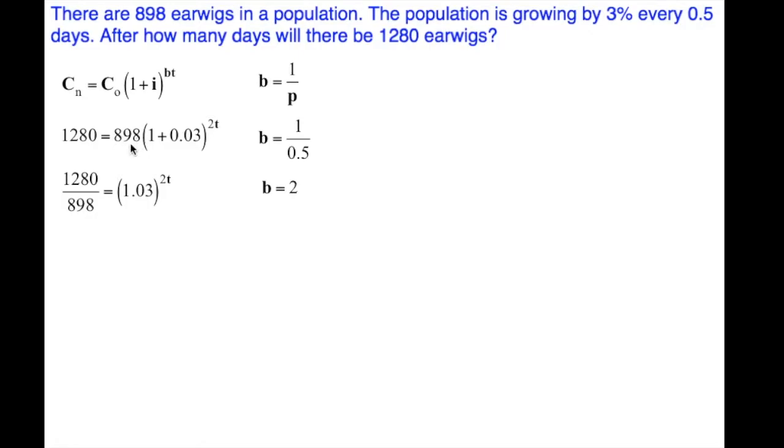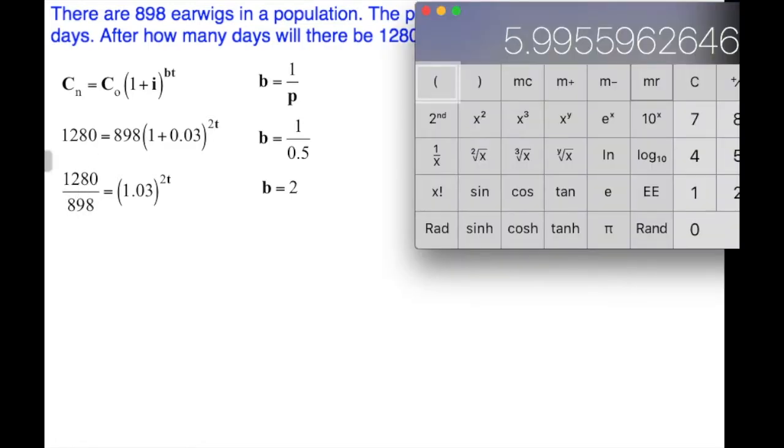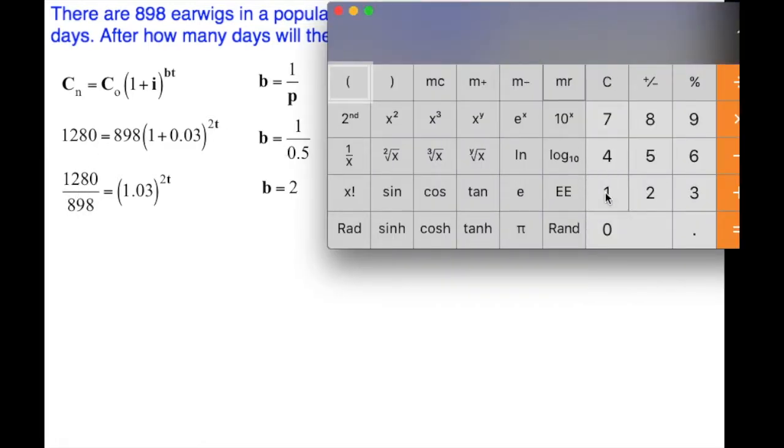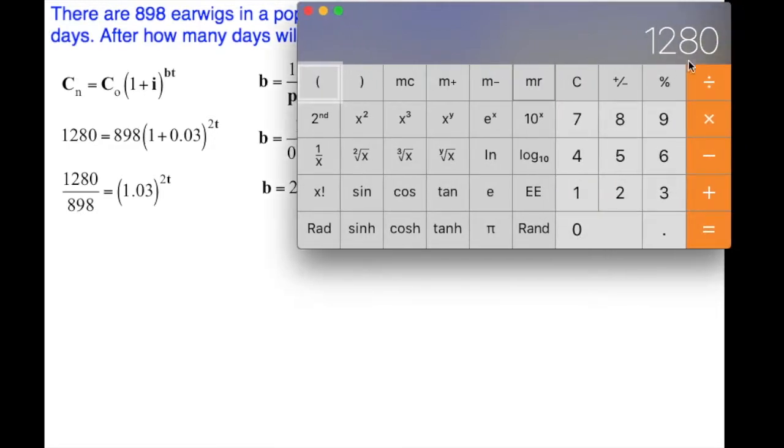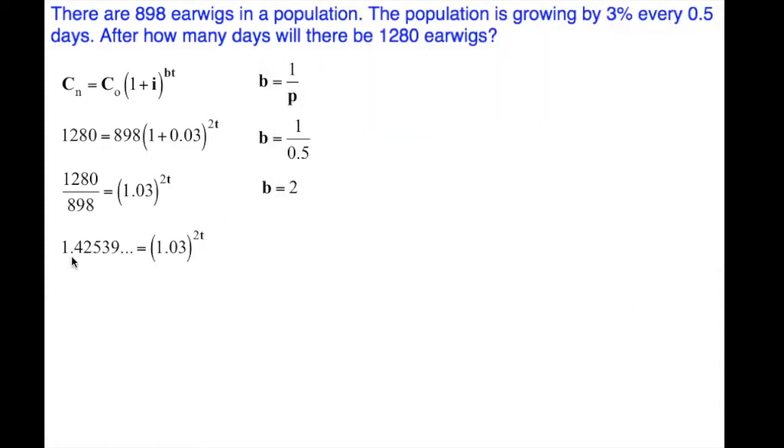To get rid of the 898, I'm going to divide both sides by 898. So we end up getting, when we divide the right-hand side it cancels. When we divide the left-hand side, we have 1,280 divided by 898. We're going to do that division. Calculator time: we have 1,280 divided by 898 is equal to 1.42538. We're going to keep that number in our calculator. Do not round this number. Do not round until you get to the end. 1.42539 goes on forever, and I've kept the unrounded version in my calculator.